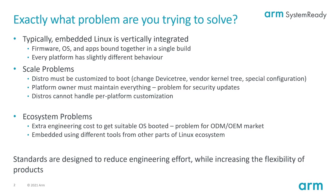In embedded Linux, we've got the ability to break things down, and we do do that. But it's more haphazard — it's more of an exception rather than a rule. So we want to fix this scale problem so that we can break up the software ecosystem and have the platform responsible for platform stuff, the OS responsible for OS stuff, and then the applications on top — to enable more mix and matching, more ability to bring new hardware in to existing problems.